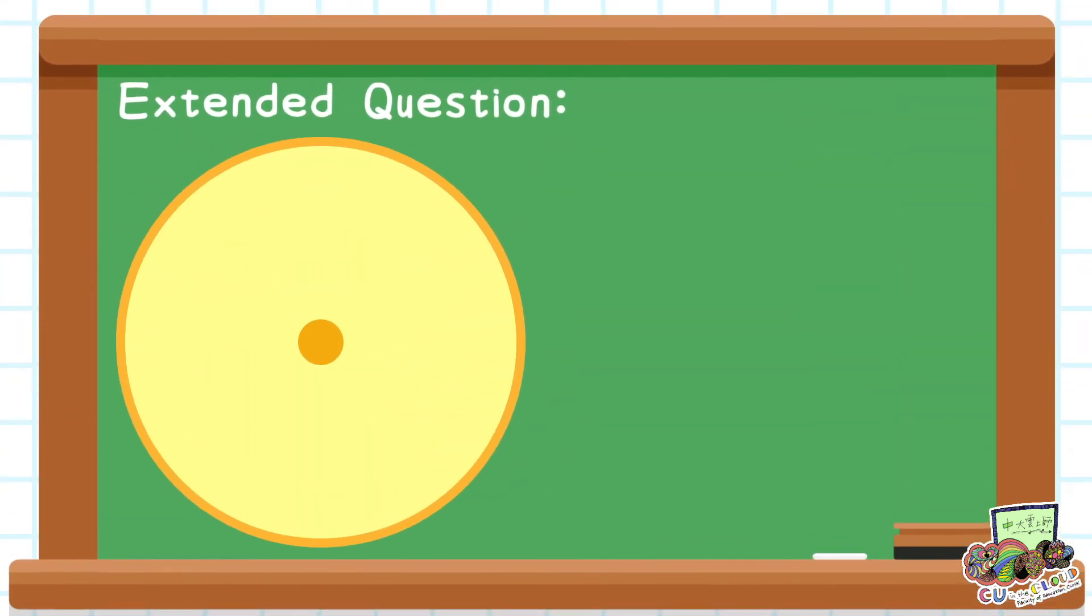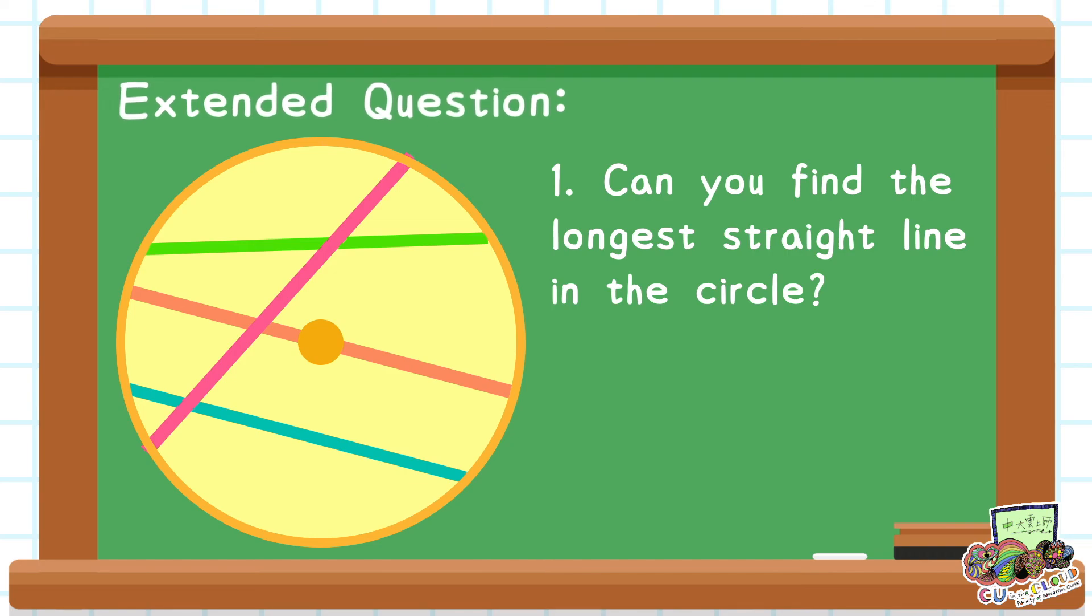Here is the extended question. Draw some straight lines that touch any two points of the circumference. Can you find the longest straight line in a circle? What is the characteristic of the line?